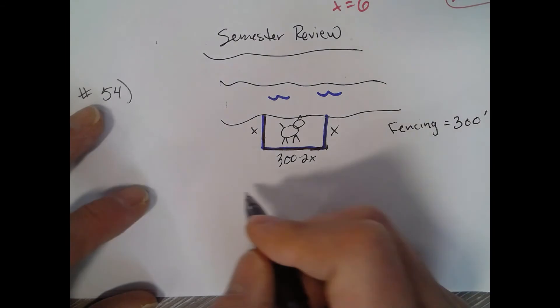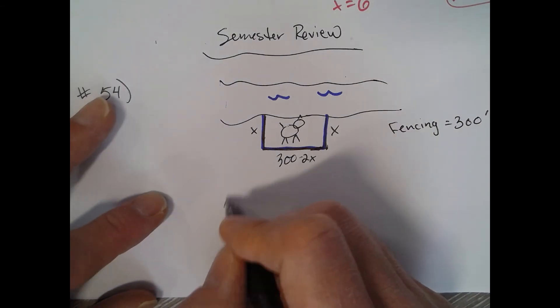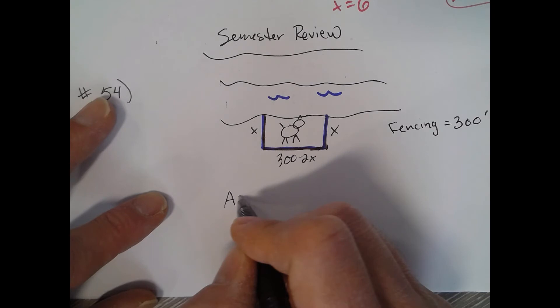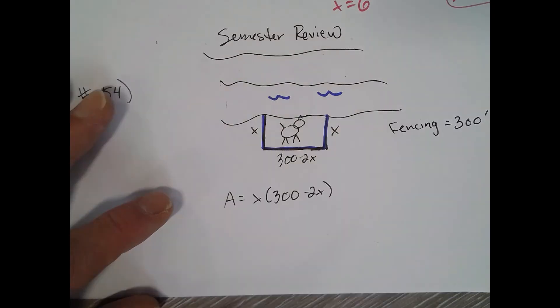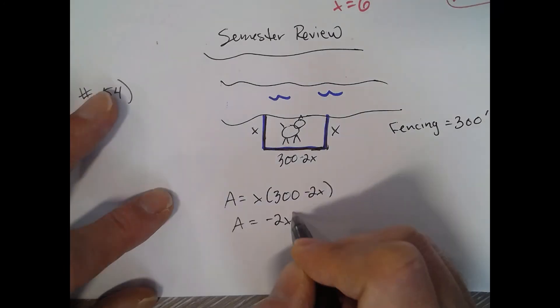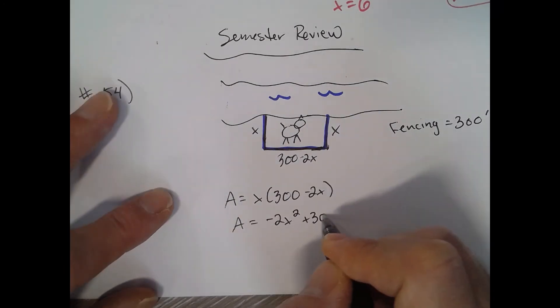We can find the area as just base times height. The equation to represent the pasture, I'm going to write it as negative 2x squared plus 300x.